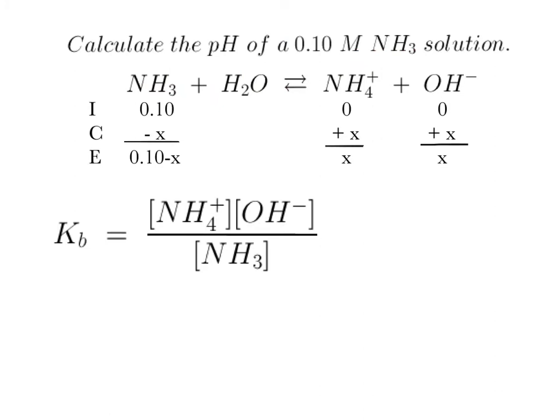Okay, so we've got all our numbers there, all we have to do is plug into the equation. You do need to look on the back of your chart, the back of your notes for the KB for NH3, and it happens to be 1.8 times 10 to the negative 5, and all we've got to do is plug in these numbers here, here, and there.